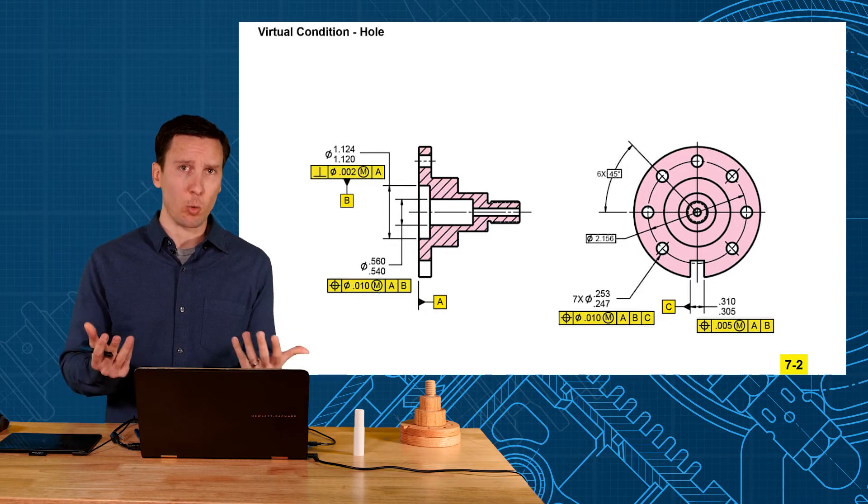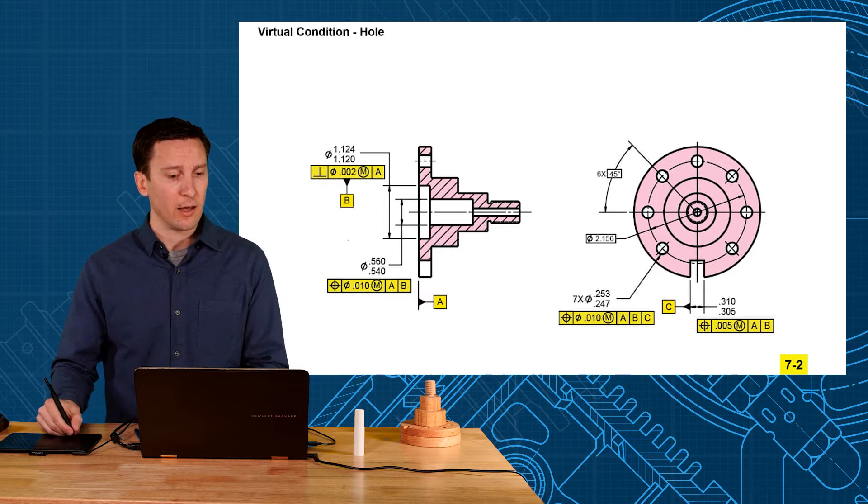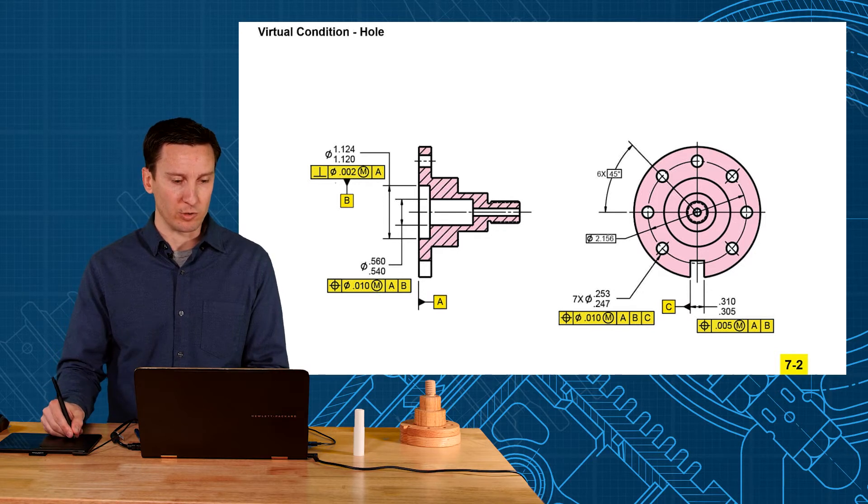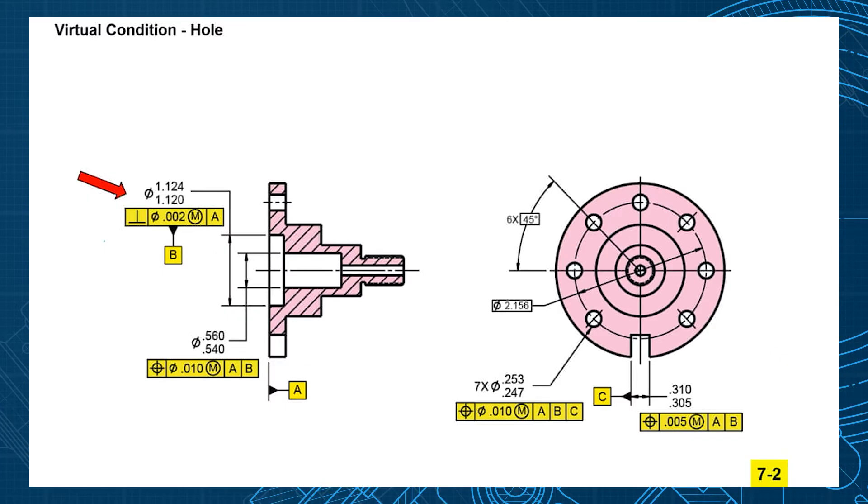So remember I teach you to qualify your datum features. A should have a flatness on it and then B should be perpendicular within two-thousands relative to A. So what would the tolerance zone look like for this perpendicularity? Perpendicular diameter two. If you could hold the tolerance zone in your hand what would it look like? A cylinder and that cylinder by default extends the length of the feature as shown.